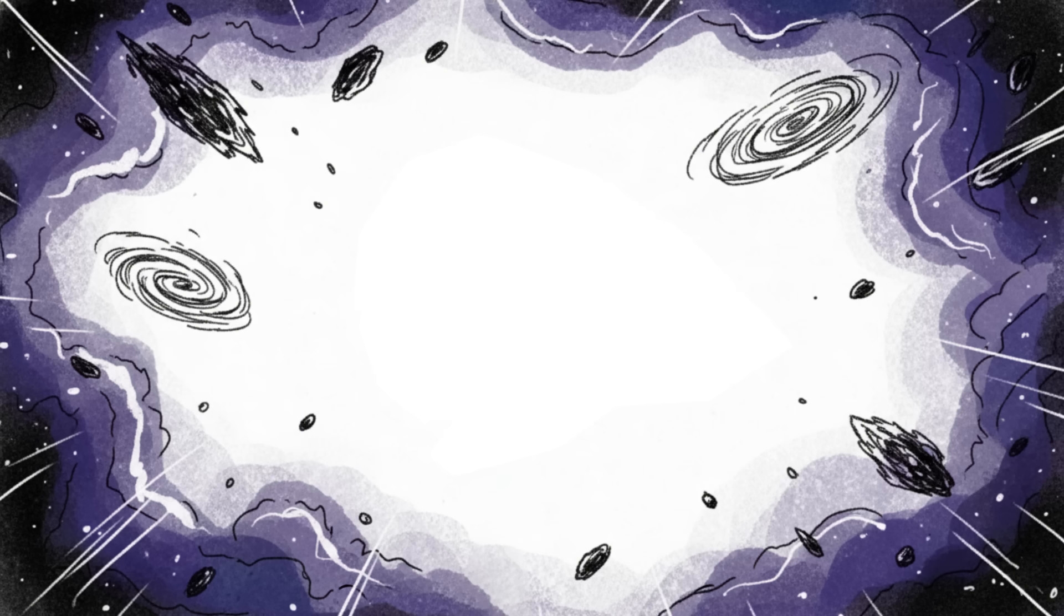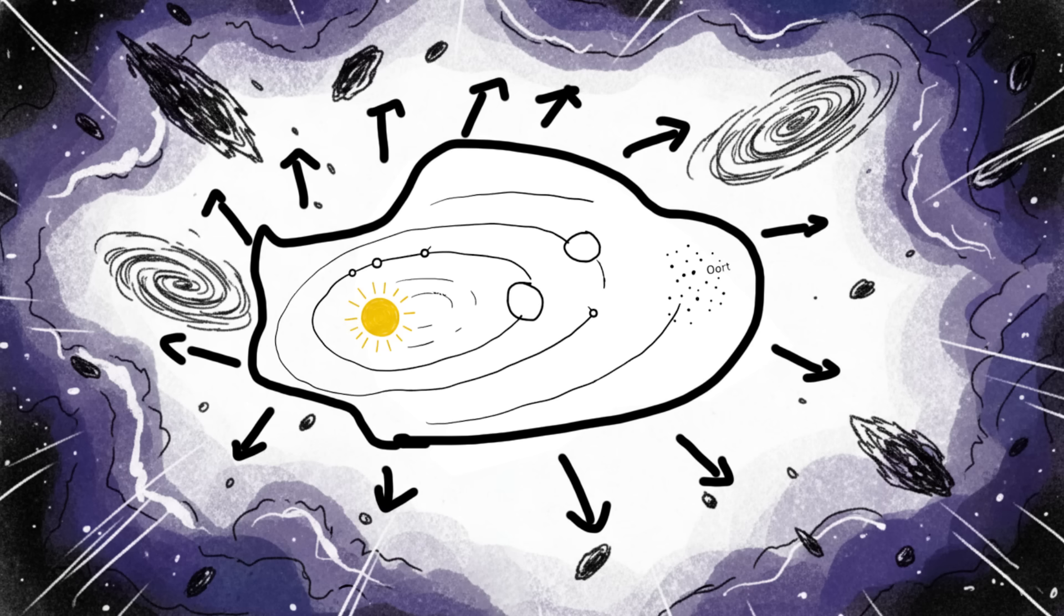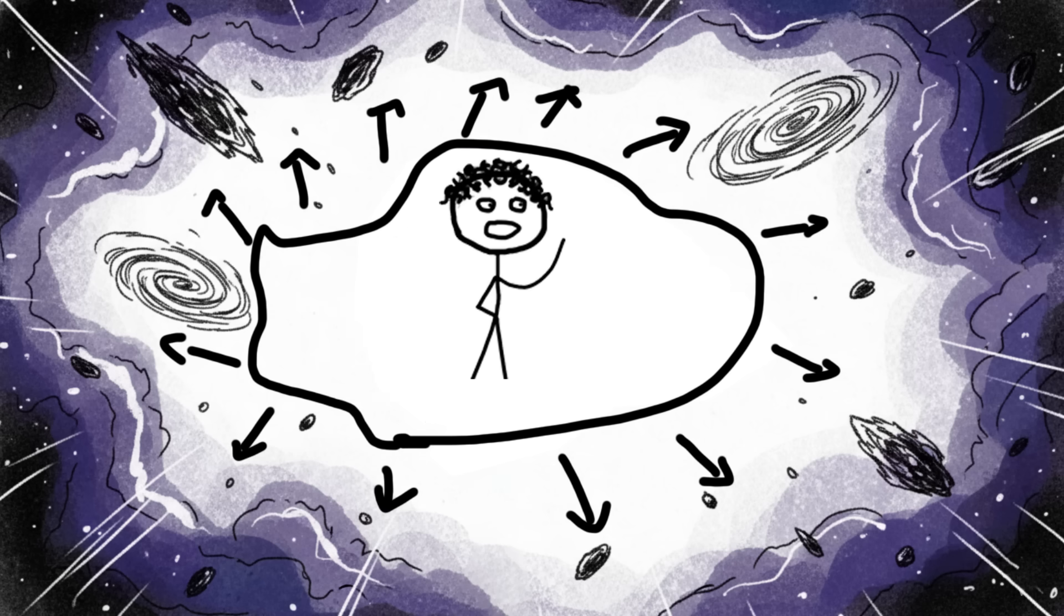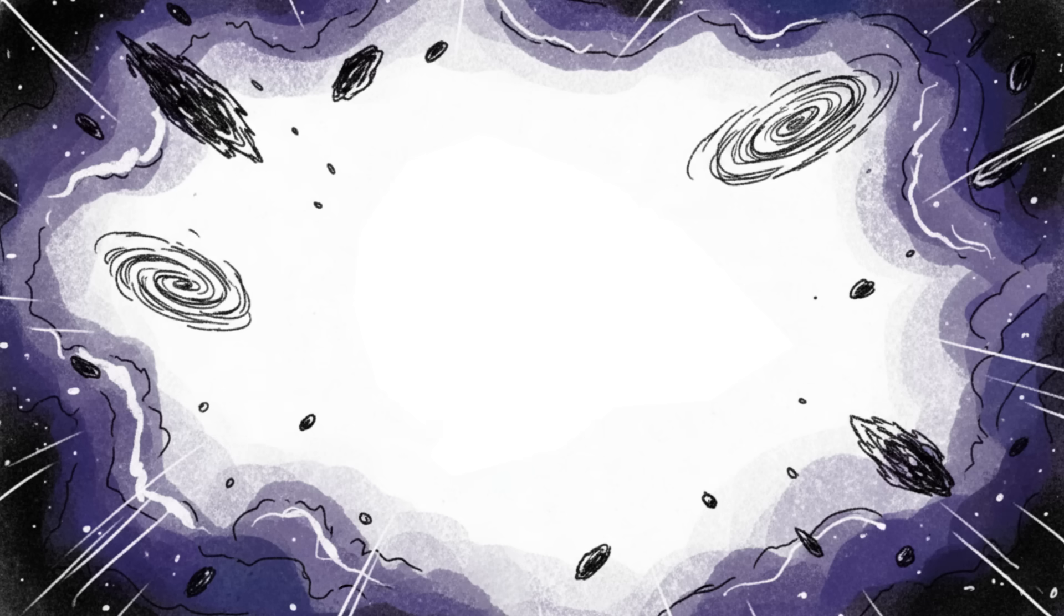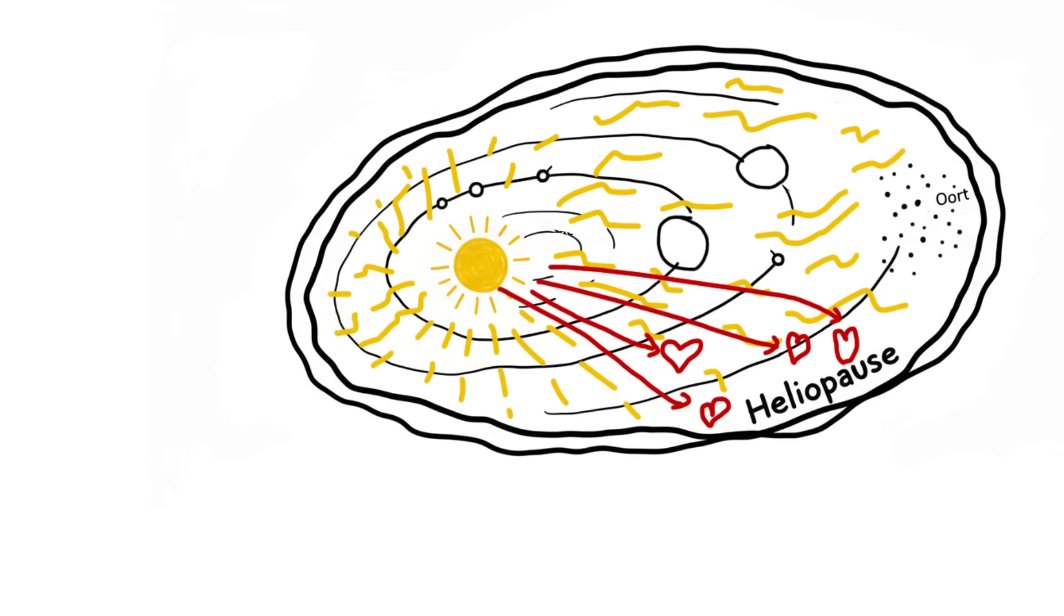The creep factor? This boundary isn't fixed. It's constantly being pushed and pulled by the forces outside, occasionally flickering and flexing. We are living inside a giant cosmic force field, a thin boundary of solar energy that keeps the truly nasty parts of the galaxy out. The moment that shield fails or weakens, we're toast.